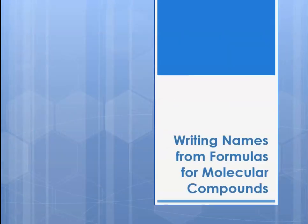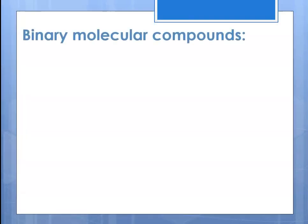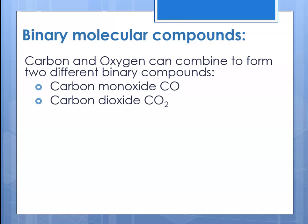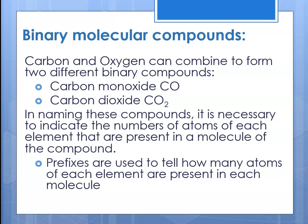We're going to begin with writing names from formulas for these molecular compounds. With these binary compounds, there are different ways they can combine. If we think about carbon and oxygen, they can combine to form two different binary compounds: carbon monoxide and carbon dioxide. In naming these compounds, it's necessary to indicate the numbers of atoms of each element present in a molecule. The way we do that is we use prefixes.